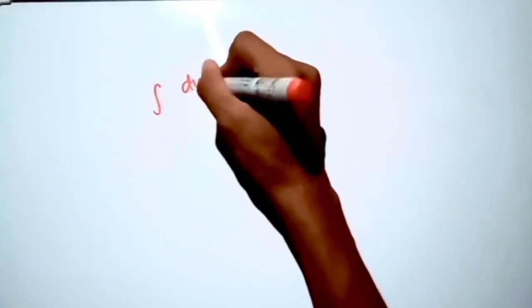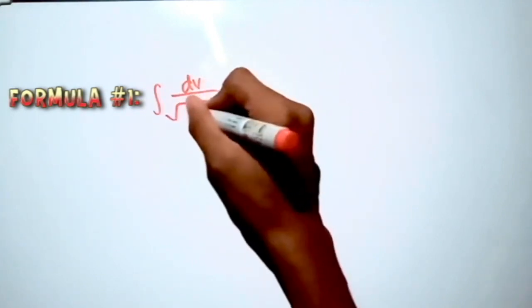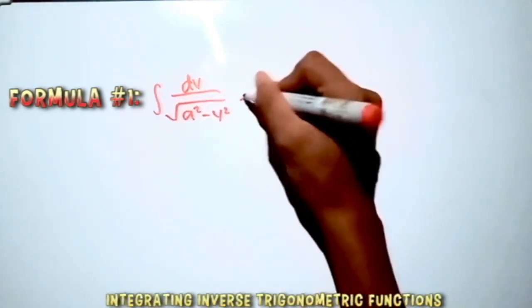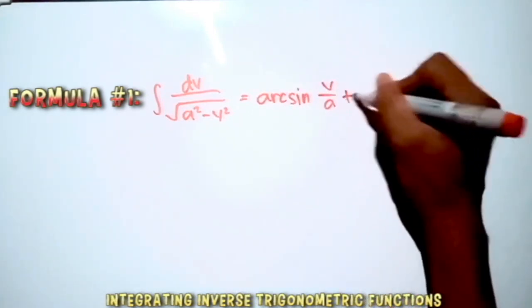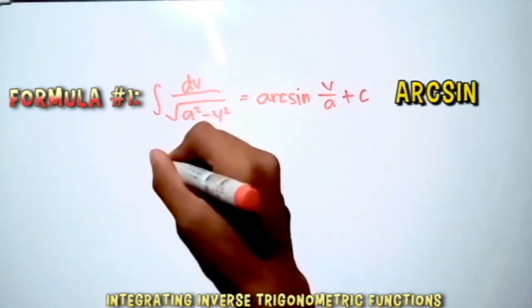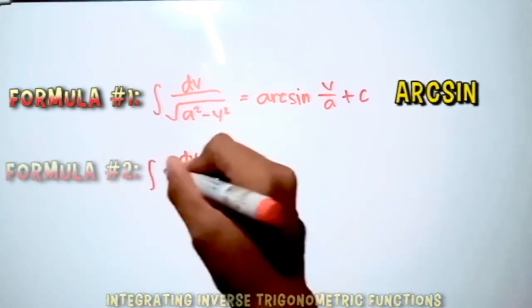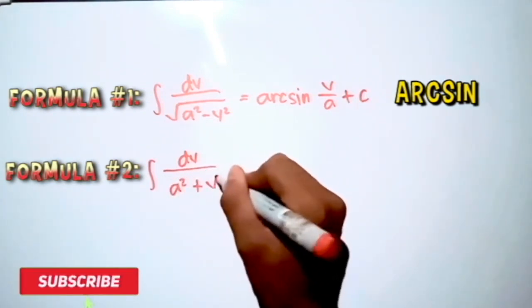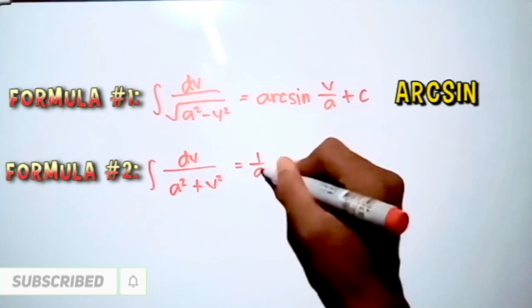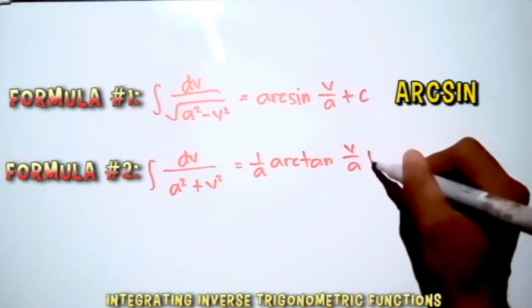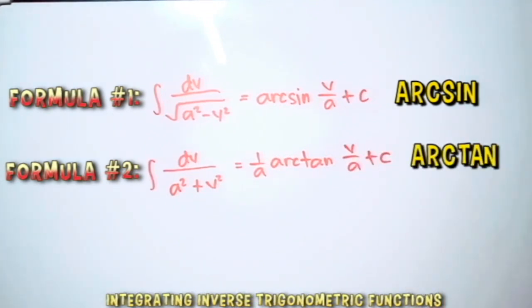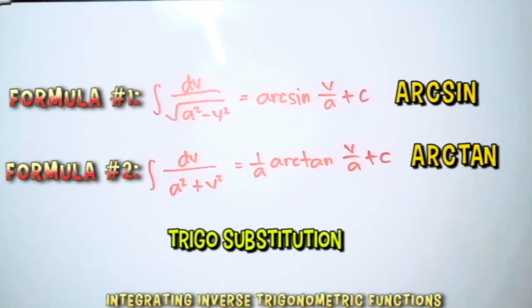The formula you need to remember is: the integral of dv over the square root of a² minus v² is equal to arcsin(v/a) + C. The second formula is: the integral of dv over a² plus v² is equal to (1/a) arctan(v/a) + C. These formulas can be derived using trigonometric substitution. Let's try some problems using these formulas.